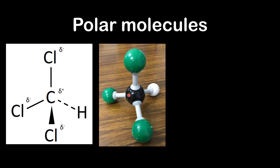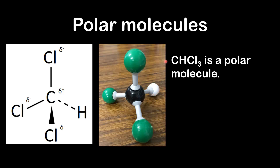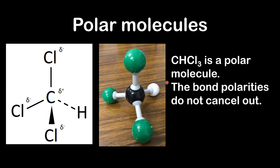If we compare this molecule with carbon tetrachloride, I've changed one of the chlorine atoms for a hydrogen atom. In this molecule, CHCl3, we now have three polar carbon-to-chlorine bonds and one non-polar carbon-to-hydrogen bond. CHCl3 is a polar molecule — the bond polarities do not cancel out, and the molecule has a net dipole moment.